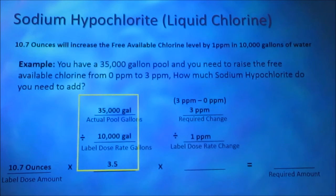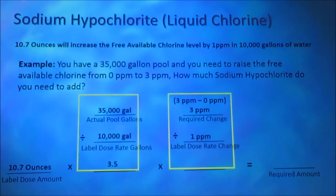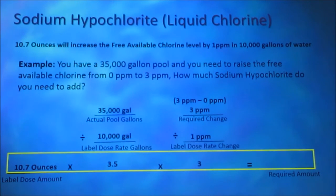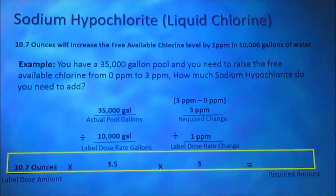We're not looking for a 1 part per million increase in this example — we're looking for a 3 part per million increase. So we divide the required change, 3 parts per million, by the label dose rate change of 1 part per million. 3 divided by 1 is 3. We want to increase the chlorine level by 1 part per million 3 times. We multiply from left to right: 10.7 ounces times 3.5 times 3 equals 112.35 ounces.